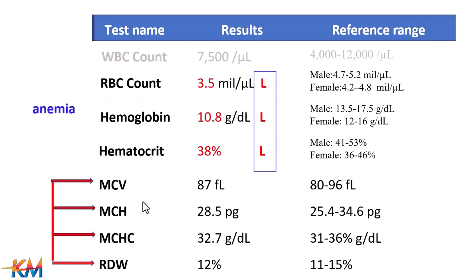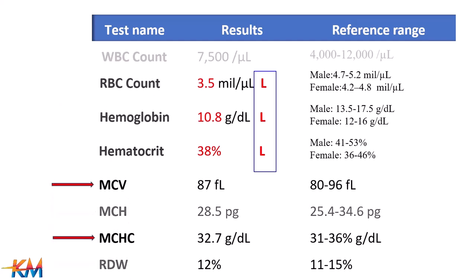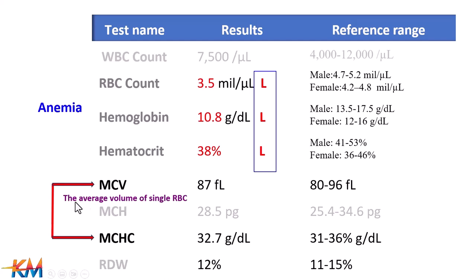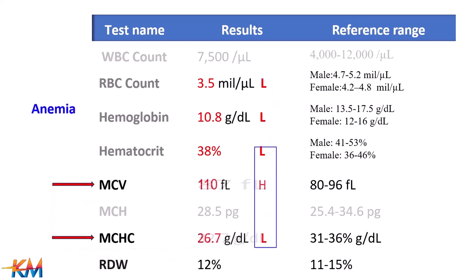Other red blood cell parameters should be examined and evaluated. There are four parameters, but we will focus on two of them only. The first one is MCV, which is the abbreviation of mean cell volume — it indicates the average volume of a single red blood cell. The second parameter is MCHC, the abbreviation of mean cell hemoglobin concentration, which indicates the mean red blood cell hemoglobin concentration.